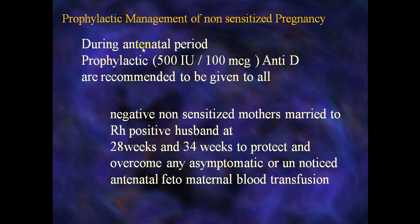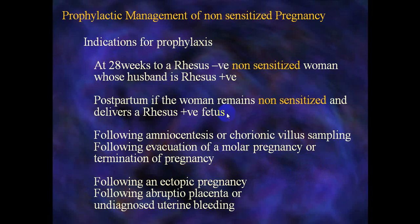Prophylactic management of non-sensitized pregnant women during the antenatal period: 500 international units of anti-D are recommended to be given to all RH-negative non-sensitized mothers married to RH-positive husbands at 28 weeks and 34 weeks. This is to protect against any asymptomatic or unnoticed antenatal fetal-maternal blood transfusion.